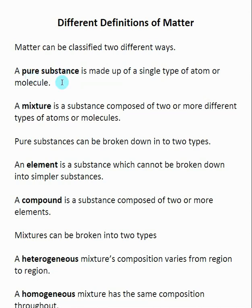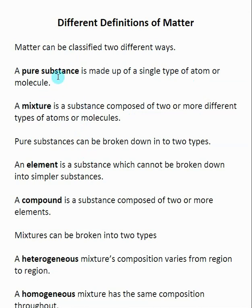A pure substance is something that's made up of a single type of atom or molecule, and a mixture is a substance that's composed of two or more different types of atoms or molecules. All matter can be separated into really two different things: a pure substance or a mixture.